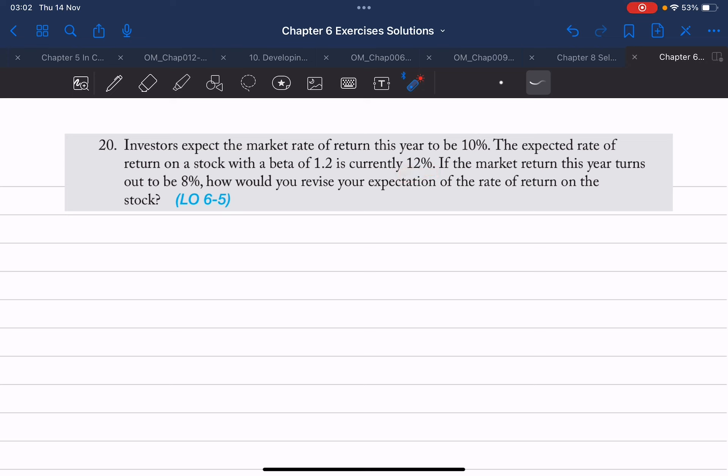If the market return this year turns out to be 8%, how would you revise your expectation of the rate of return on the stock?